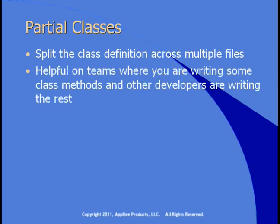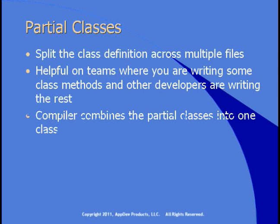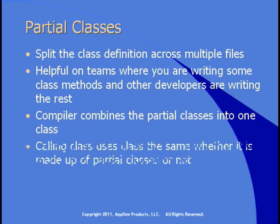This is really helpful if you're working on a team where you're writing some of the methods or properties in a class, and one or more developers are writing the rest. So you can have three developers building the customer class — each responsible for their own file. When the project is built, the compiler will combine the partial classes into one class. Calling code uses the class the same way whether it's made up of partial classes or not, because partial classes is just a design-time thing.